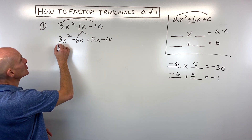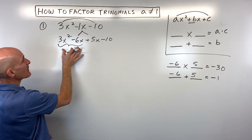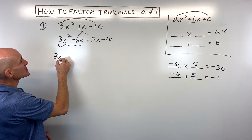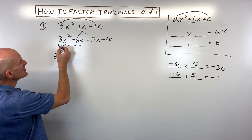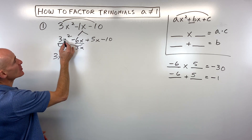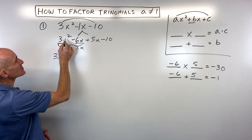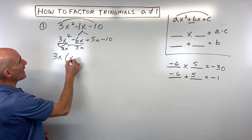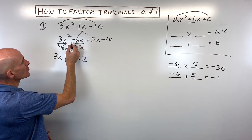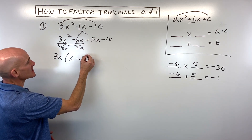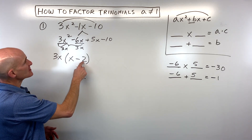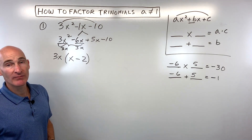To factor by grouping, look at the first two terms and ask what you can factor out. The greatest common factor is going to be 3x. One way to find what remains is to put 3x in the denominator and reduce: the 3s cancel, x squared divided by x gives x, and 6 divided by 3 gives 2, with the negative sign preserved. So the first group factors as 3x times the quantity x minus 2. You can verify by distributing 3x back in to get 3x squared minus 6x.